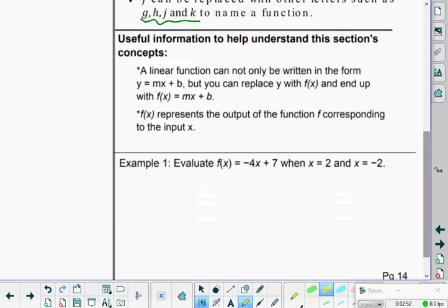Useful information to help understand this section's concepts. First off, a linear function cannot only be written in the form y equals mx plus b, but we could replace the y with the f of x, and end up with it looking like f of x equals mx plus b. f of x represents the output of a function, just like y was an output. f of x is an output of the function with the corresponding value with input x. So when I put in an x, we know we can come out with a y. When I put in an x, I can come out with f of x.